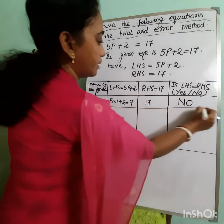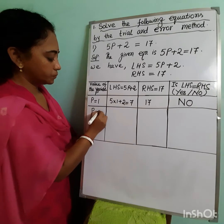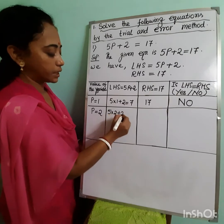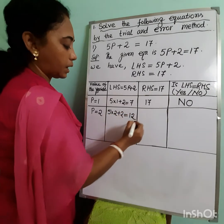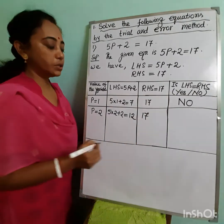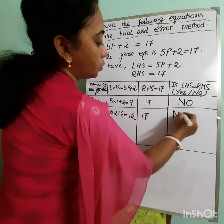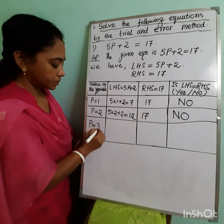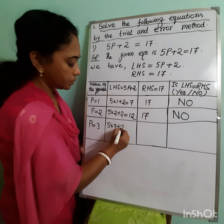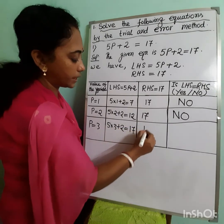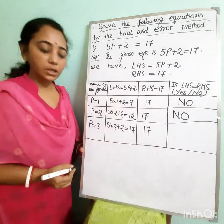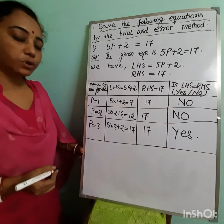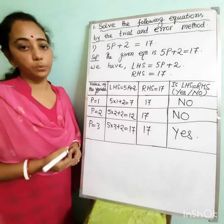Next, for p = 2: left hand side is 5 × 2 + 2 = 12, and right hand side is 17. Both sides are not equal, so we write no. Then for p = 3: left hand side is 5 × 3 + 2 = 15 + 2 = 17, and right hand side is also 17. Both sides are equal, so we write yes.